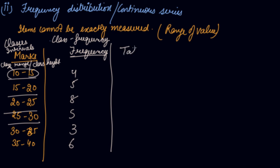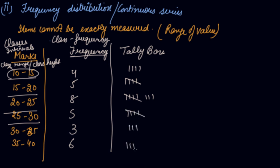We can also draw tally bars for the continuous series: 4 marks for the first class, 5 for the second, 8 for the third, 5 for the fourth, 3 for the fifth, and 6 for the sixth. This is your continuous series, also called the frequency distribution series. Do download our Scholars Learning App and enjoy the learning experience with us.